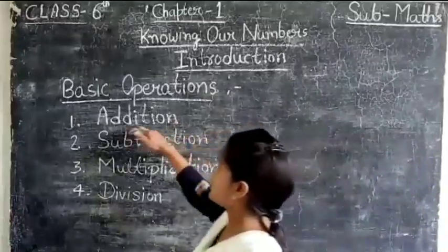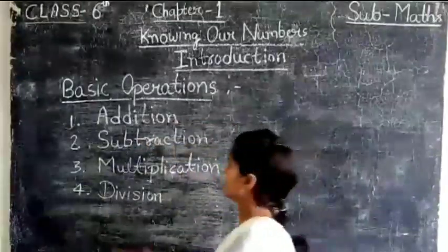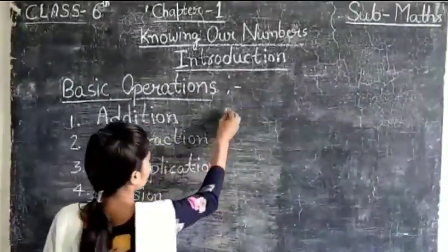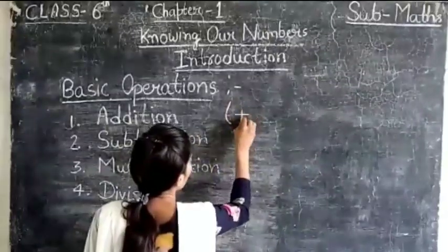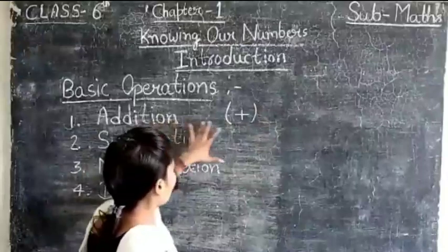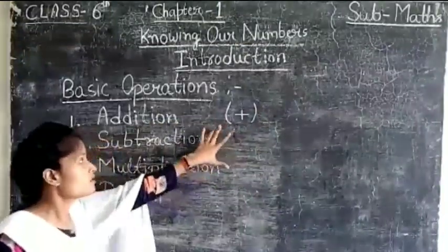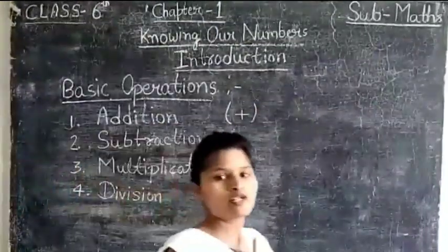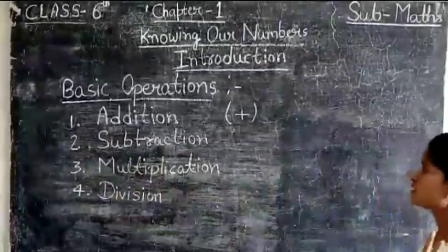First one is addition. The addition is defined by this symbol, that means plus symbol. Addition means do aanko ka jodna, the sum of two numbers.